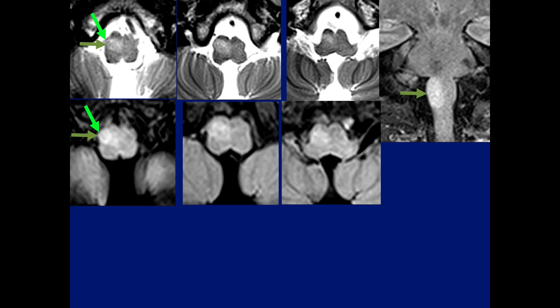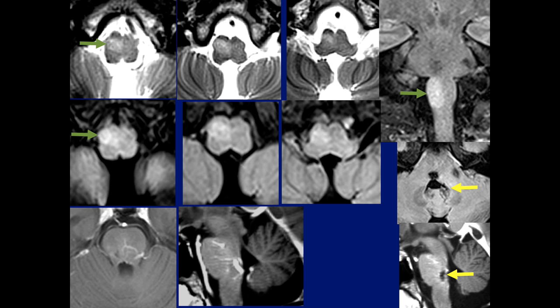Here's another case that was initially read as showing a tumor involving the olive because of the enlargement. But this was not a tumor — this was another example of hypertrophic olivary degeneration, which in this case was the result of surgery in the brainstem involving mainly the pons. This patient had multiple bleeds and evacuation of the hematoma.